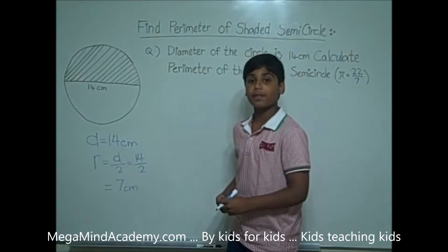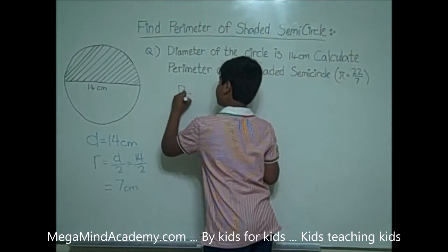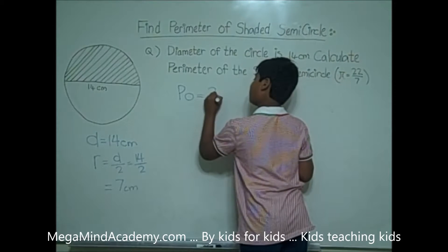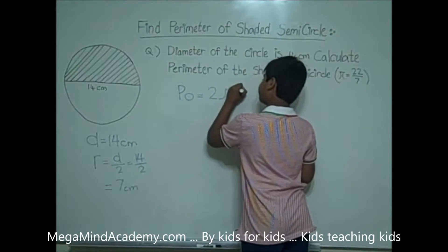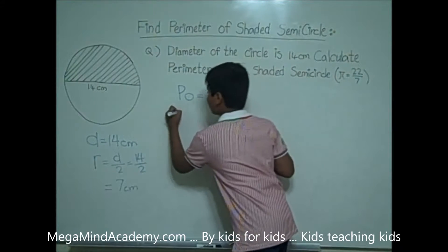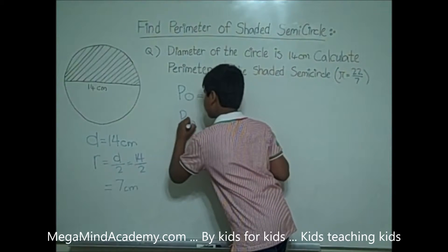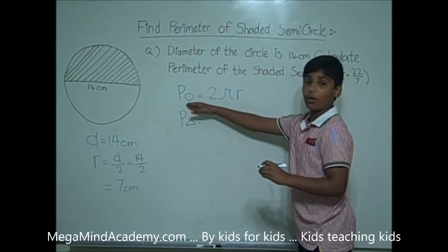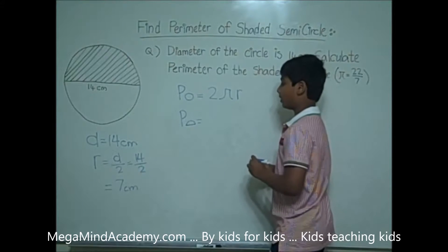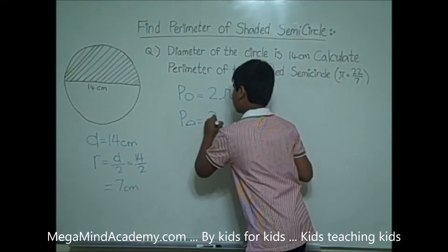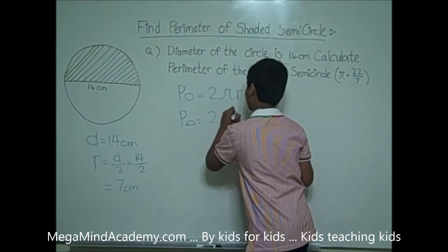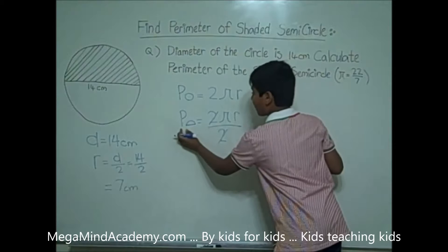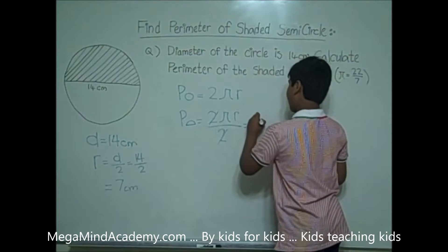We know that the perimeter of the circle — P for perimeter of the circle — is equal to 2 pi r. So that means that the perimeter of the semicircle is half as much as 2 pi r, because that is a whole circle. So the perimeter of the semicircle is 2 pi r over 2. The 2s cancel out, which makes the perimeter of the semicircle equal to pi r.